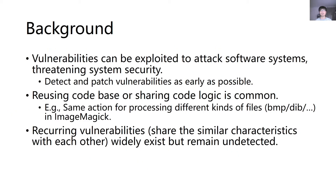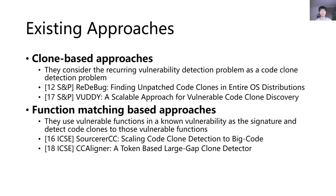Vulnerabilities can be exploited to attack software systems. Due to reusing codebase or sharing code logic in software systems, recurring vulnerabilities, which share similar characteristics with each other, widely exist but remain undetected. A general idea to detect recurring vulnerabilities is to match the source code of a target system with known vulnerabilities. We classify these approaches into clone-based and function-matching-based.